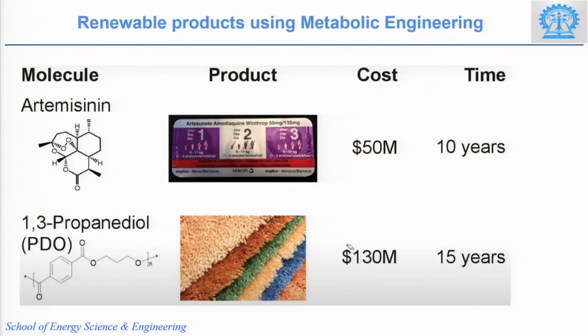Some products you may already know have come to market because of metabolic engineering. For example, artemisinin — the drug used for malaria — was developed by Professor Jay Keasling at UC Berkeley at a cost of around 50 million dollars, taking almost 10 years. Similarly, 1,3-propanediol (PDO), used to manufacture fibers, cost around 130 million dollars and took almost 15 years. Metabolic engineering is a long-term process, but learning these techniques will definitely help you solve many challenging problems — not just in energy and food, but across various fields.